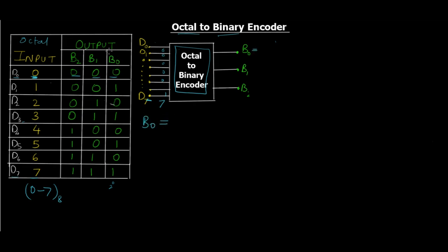In order to do that, let me first write down B0, the first output expression. For B0, we're going to take this column and find out wherever the value is 1. This is 1 here, here, and here, and then we'll see the corresponding inputs for that case. So B0 is 1 when D1 is there, D3 is there, and D5 is there.